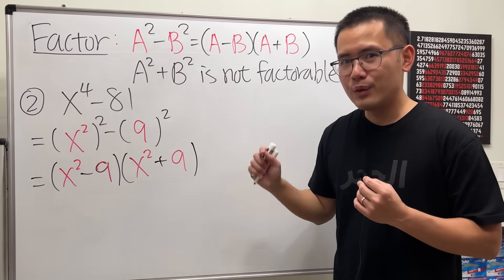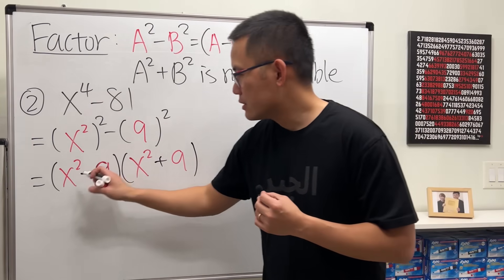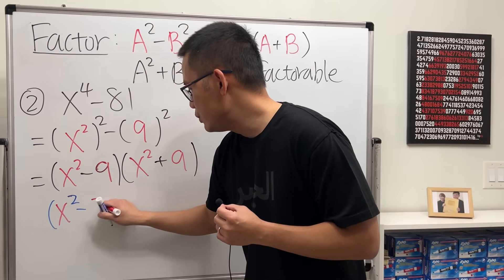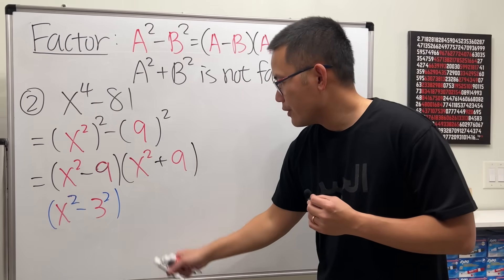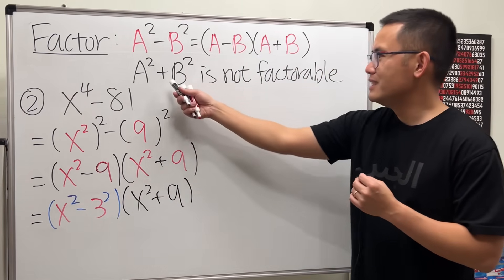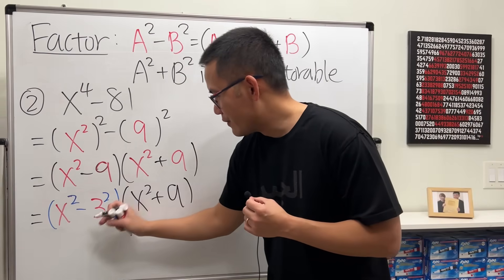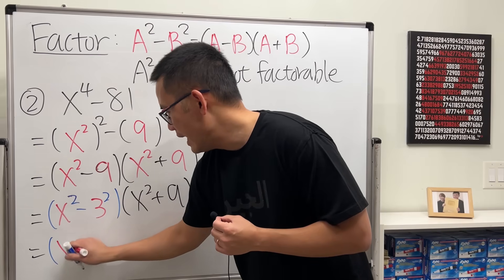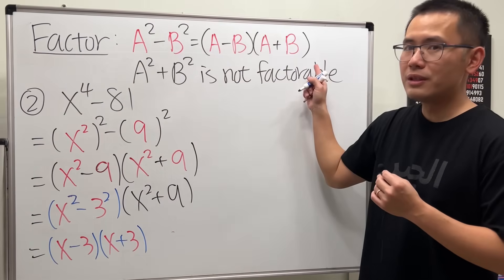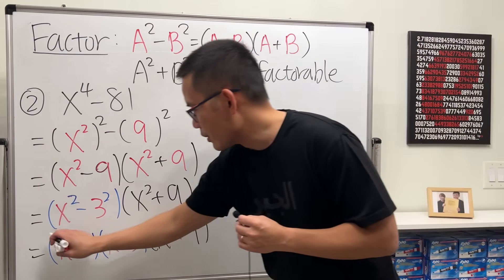Now ask: can we do more? For x squared minus 9, notice 9 is the same as 3 squared, so we can look at this as x squared minus 3 squared and continue factoring. For x squared plus 9, that's x squared plus 3 squared which is not factorable — just leave it. For the first parentheses we get x minus 3 times x plus 3. Write x squared plus 9 alongside — this is the most we can do.